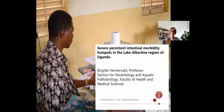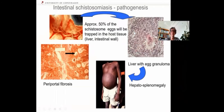Hello, everybody. I'm Brigitte Vennervald, professor at the University of Copenhagen, and I will be talking about severe persistent intestinal morbidity hotspots in the Lake Albertine region of Uganda. If we start by looking at morbidity of intestinal schistosomiasis, the worms are located around the intestines in the mesenteric veins. When they excrete eggs, approximately 50% will be trapped in the host tissue — either in the liver or in the intestinal wall. If we have several granulomas — because eggs trapped in the liver will cause granulomas — this may lead to hepatosplenomegaly, and eventually, if it persists, periportal fibrosis: scar tissue forming around the little portal branches of the liver.